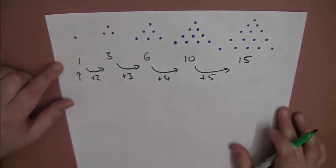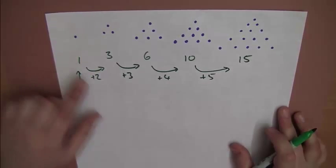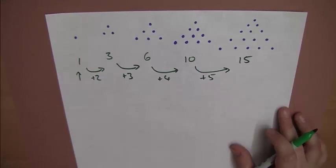And that's the key to the triangle numbers. They're just a sequence where we're adding on an extra 1 each time.